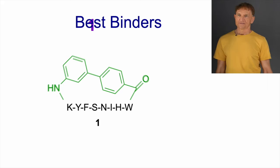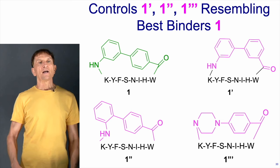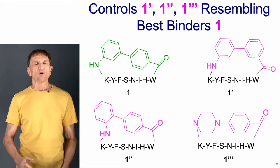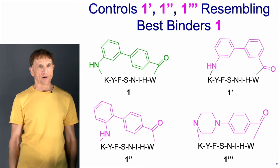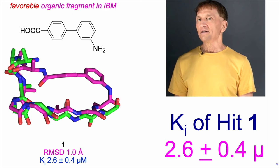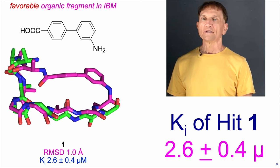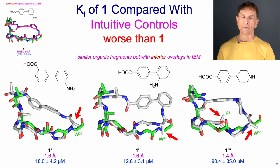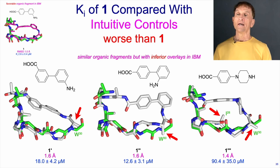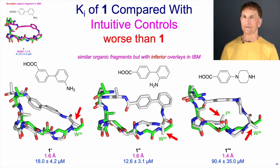What we came up with is one-prime, one-double-prime, and one-triple-prime, containing three organic groups that I honestly couldn't predict would be better or worse binders in a cycloorganopeptide without making them and doing the experiment. But IBM predicts that compound one is going to be the best — and recall compound one has a Ki of 2.6 micromolar. When we tried to overlay one-prime, one-double-prime, and one-triple-prime, we got RMSDs all inferior to compound one, and when we tested them in the FP assay their binding was all inferior to compound one. These intuitive controls were worse than what IBM did for us.